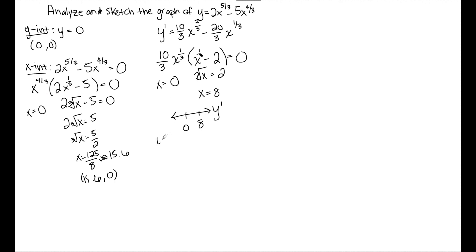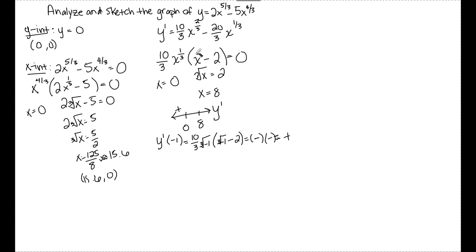For the interval less than 0, I plug in negative 1 because I know its cube root. I have (10/3) times the cube root of negative 1, times (cube root of negative 1 minus 2). The cube root of negative 1 is negative 1, so the coefficient is negative. Inside the parentheses: negative 1 minus 2 is negative. A negative times a negative is positive, so y prime is positive here. For 0 to 8, I plug in 1: the cube root of 1 minus 2 is negative, times a positive coefficient gives negative. So y prime is negative between 0 and 8.